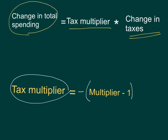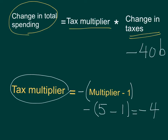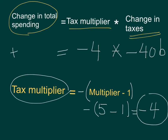The tax multiplier is equal to the regular multiplier minus 1, with a negative sign in front of it. So for example, if the regular multiplier is 5, we subtract 1 and put a minus sign in front, so it would be minus 4. Then if the government decreases taxes by $40 billion and multiplies that by the tax multiplier of minus 4, you get minus 4 times minus 40, which gives a positive number — plus 160. So total spending, or GDP, will go up by 160 if taxes decrease by 40 and the regular multiplier is 5.